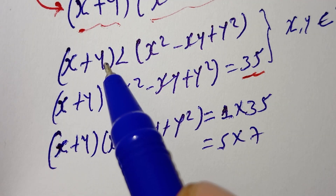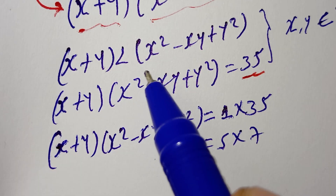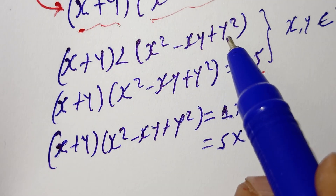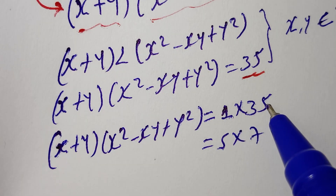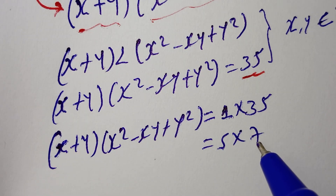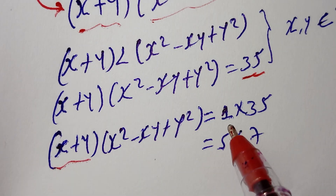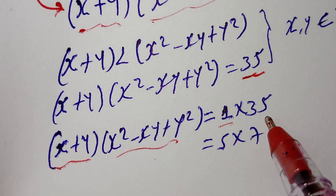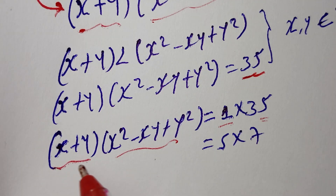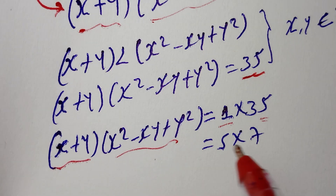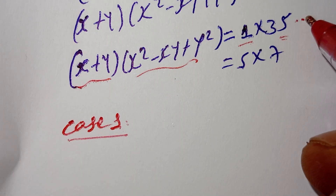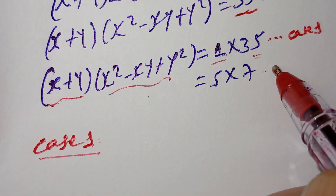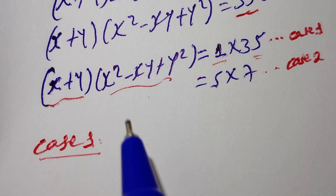Since x plus y is less than x squared minus xy plus y squared, and considering the factor pairs of 35: for 1 times 35, we have 1 less than 35, and for 5 times 7, we have 5 less than 7. This gives us Case 1 and Case 2.